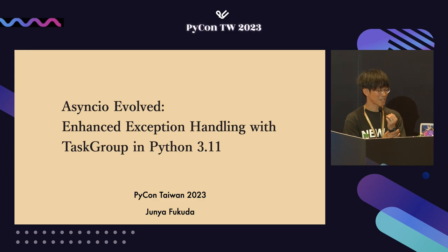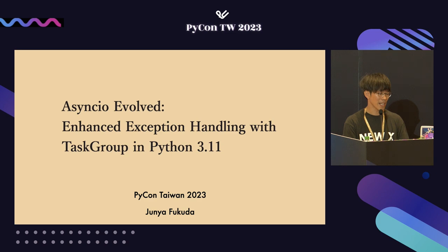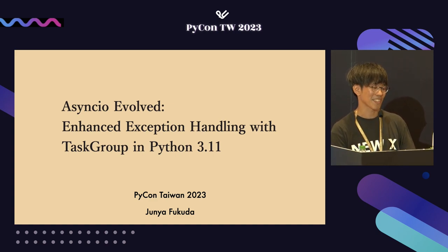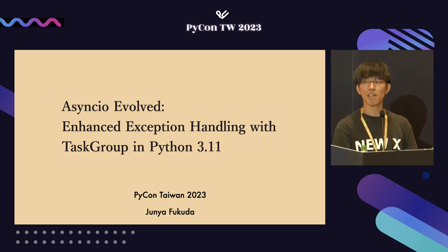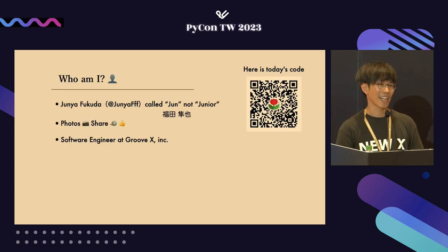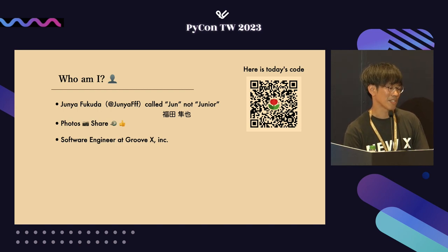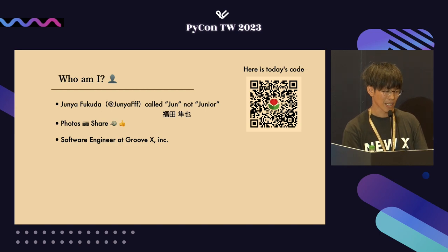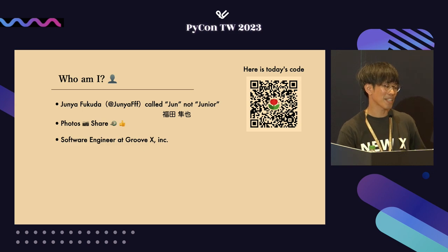Hi, thank you for the introduction. I will talk about asyncio evolved: enhanced exception handling with task groups in Python 3.11. I'm excited to be in Taiwan for the first time in 10 years. I want to thank the staff for the wonderful conference. My name is Junior Fukuda from Nagano in Japan, and you can find me on Twitter — now X — as JuniorFFF.